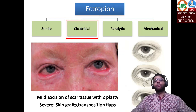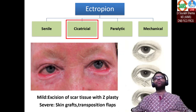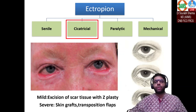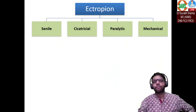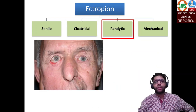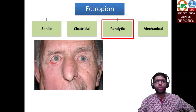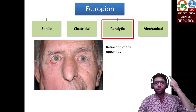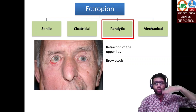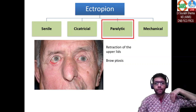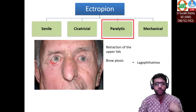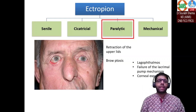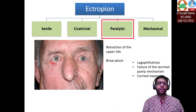For paralytic ectropion due to seventh nerve palsy: associated features include inability to close the eye, upper eyelid retraction, frontalis not working causing brow ptosis, lagophthalmos, corneal staining, and increased watering due to lacrimal pump failure — since orbicularis forms the lacrimal pump.